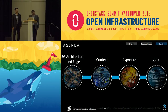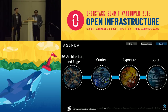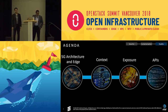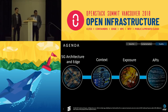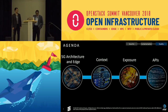This is the agenda. We're going to talk about the 5G architecture and edge, then go into what contexts are available or could be available, and then how those contexts could be exposed in the network. And then we'll talk a little bit about APIs.